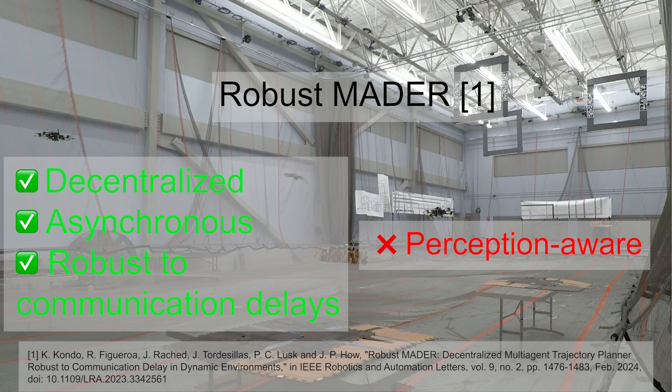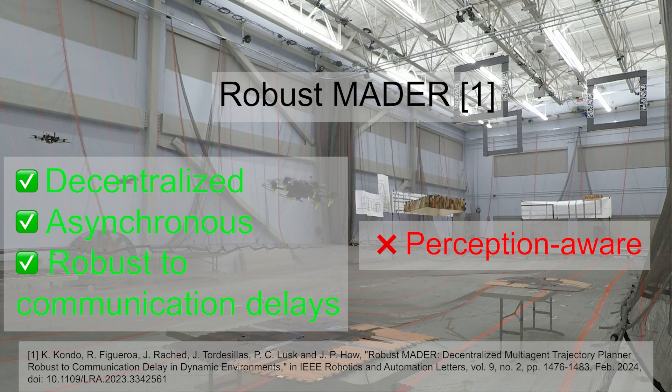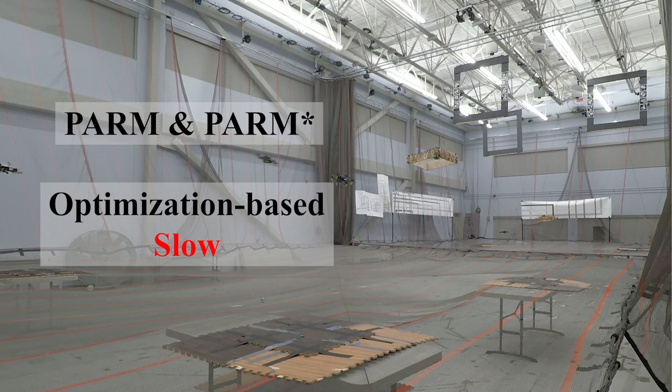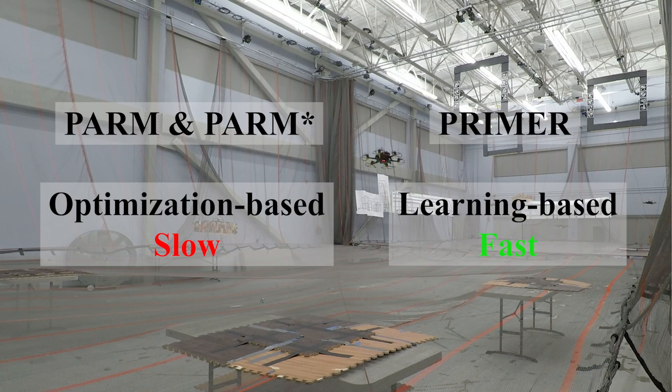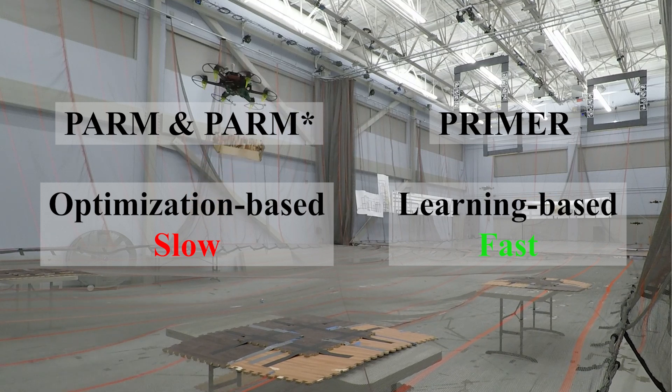To address this limitation, we first introduce an optimization-based approach called PARM and PARMSTAR. PARMSTAR is effective but computationally expensive, so we use a neural network to learn the behavior of this optimization-based approach and develop Primer.